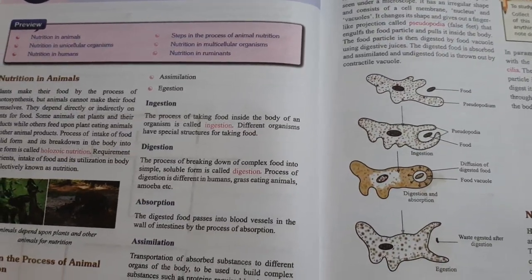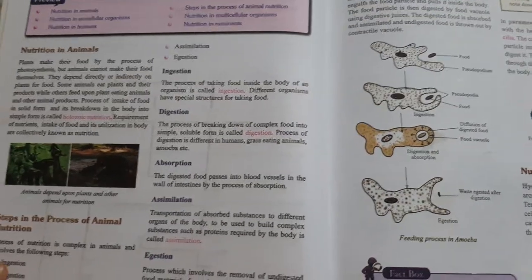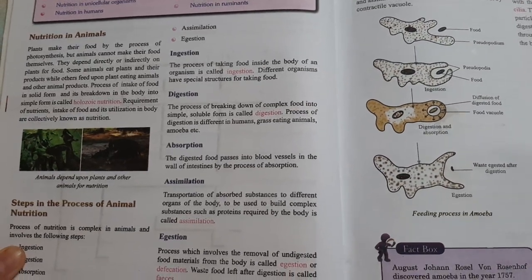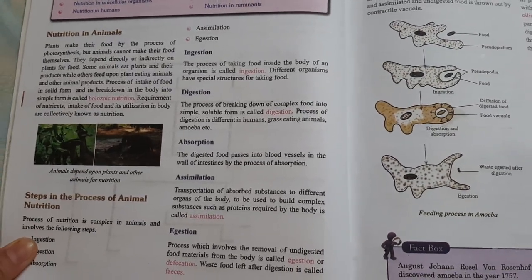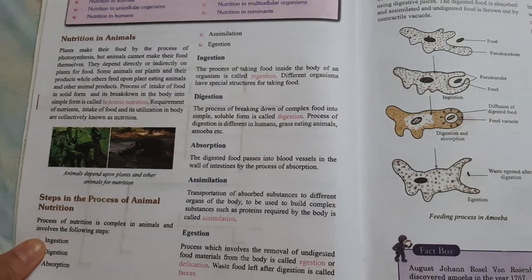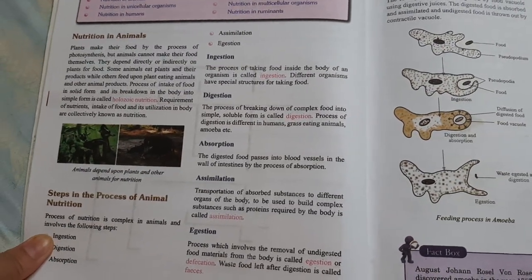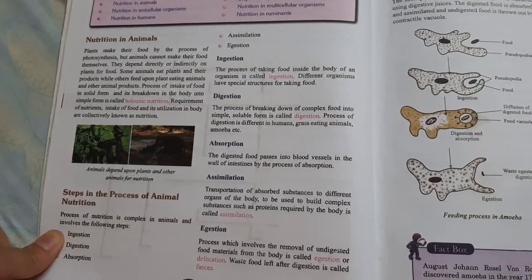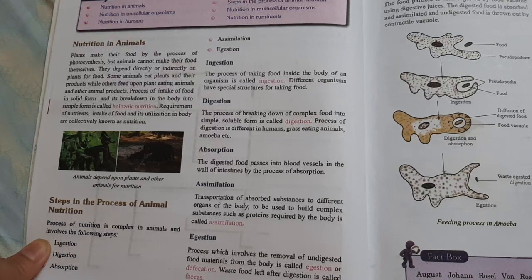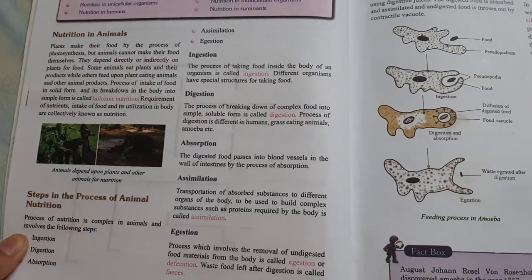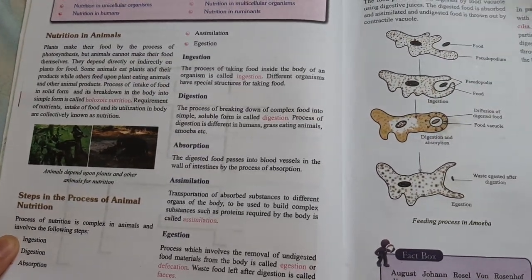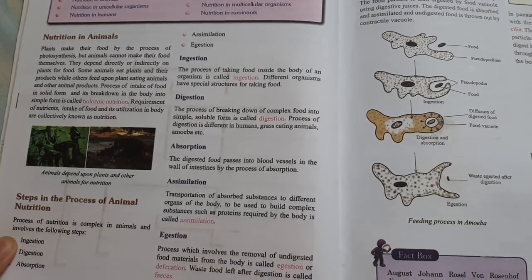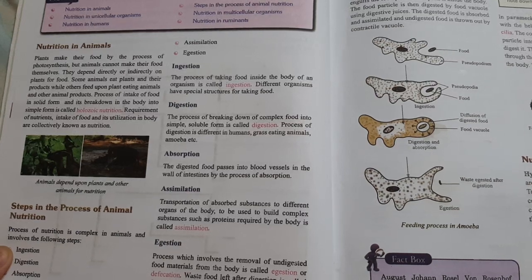Good morning students. We have already learned about the steps in the process of animal nutrition: ingestion, digestion, absorption, assimilation, and egestion. Ingestion is the process of taking food inside the body. Digestion is the process of breaking down complex food into simpler substances. Absorption is when the digested food passes into blood vessels.